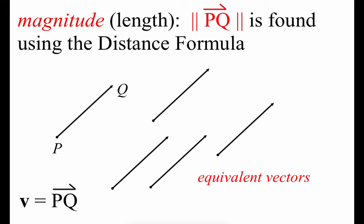When we're talking about the magnitude of a vector, we're really talking about how long it is. The magnitude is represented by two vertical lines around the outside of our vector. These vectors are somewhere out in space and we use our coordinate grid to represent them, so to find the length we use the distance formula. On screen there are vectors with exactly the same length pointing in the same direction — we consider those equivalent vectors. As a shorthand, we use a lowercase bold letter, so we could call vector PQ simply vector v.